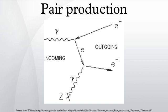However, all other conserved quantum numbers of the produced particles must sum to zero, thus the created particles shall have opposite values. For instance, if one particle has electric charge of plus one the other must have electric charge of minus one, or if one particle has strangeness of plus one then another must have strangeness of minus one.